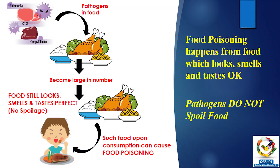In food poisoning, the most important thing to understand is that the food looks okay — that's why people consume it. If the food is showing signs of spoilage in any way, people will not consume it and will not get food poisoning. Theoretically, the food looks okay, has no signs of spoilage, and has pathogen microorganisms which result in food poisoning, or it might have the toxin of pathogen microorganisms which results in food poisoning as well.